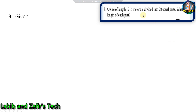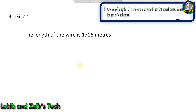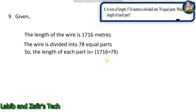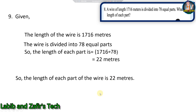Our ninth word problem: a wire of length 1,716 meters is divided into 78 equal parts, what is the length of each part? We have to divide 1,716 by 78. The wire is 1,716 meters divided into 78 equal parts, so the length of each part is 1,716 divided by 78, that is 22 meters.